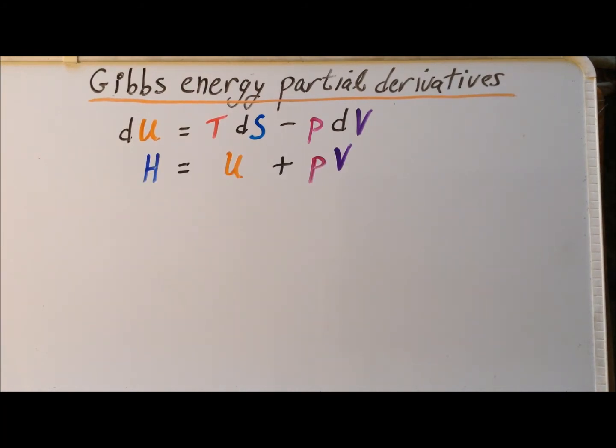Next, we recall the state function enthalpy, for which we use the letter H, and it is defined as U plus PV, where U is the internal energy, P is the pressure, and V is the volume.